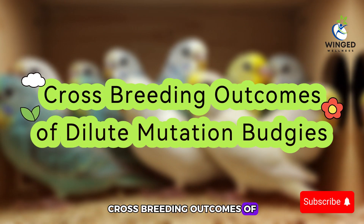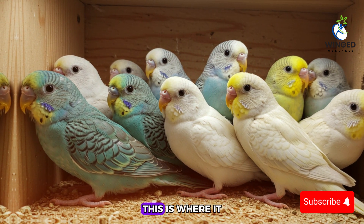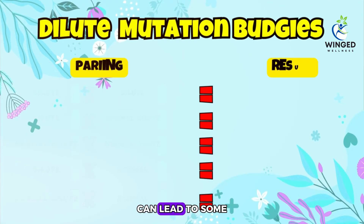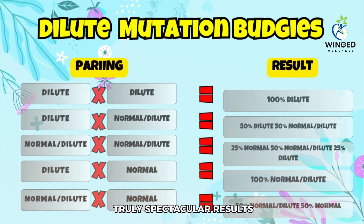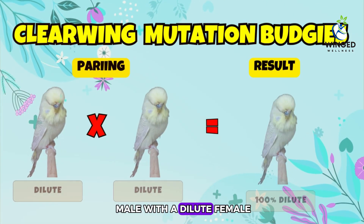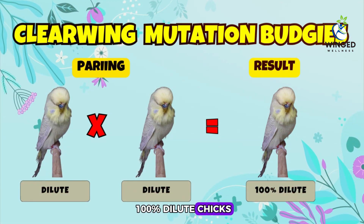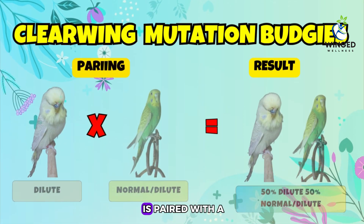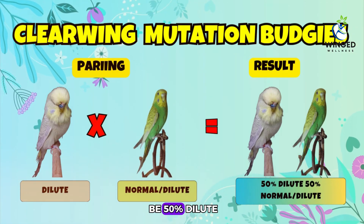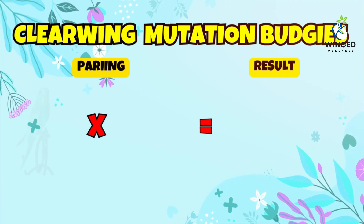Cross-breeding dilute mutation budgies with other mutations can lead to some truly spectacular results. When pairing a dilute male with a dilute female, the result will be 100% dilute chicks. In the second pairing, where a dilute male is paired with a normal female that is split to dilute, the outcome will be 50% dilute and 50% normal split to dilute chicks.